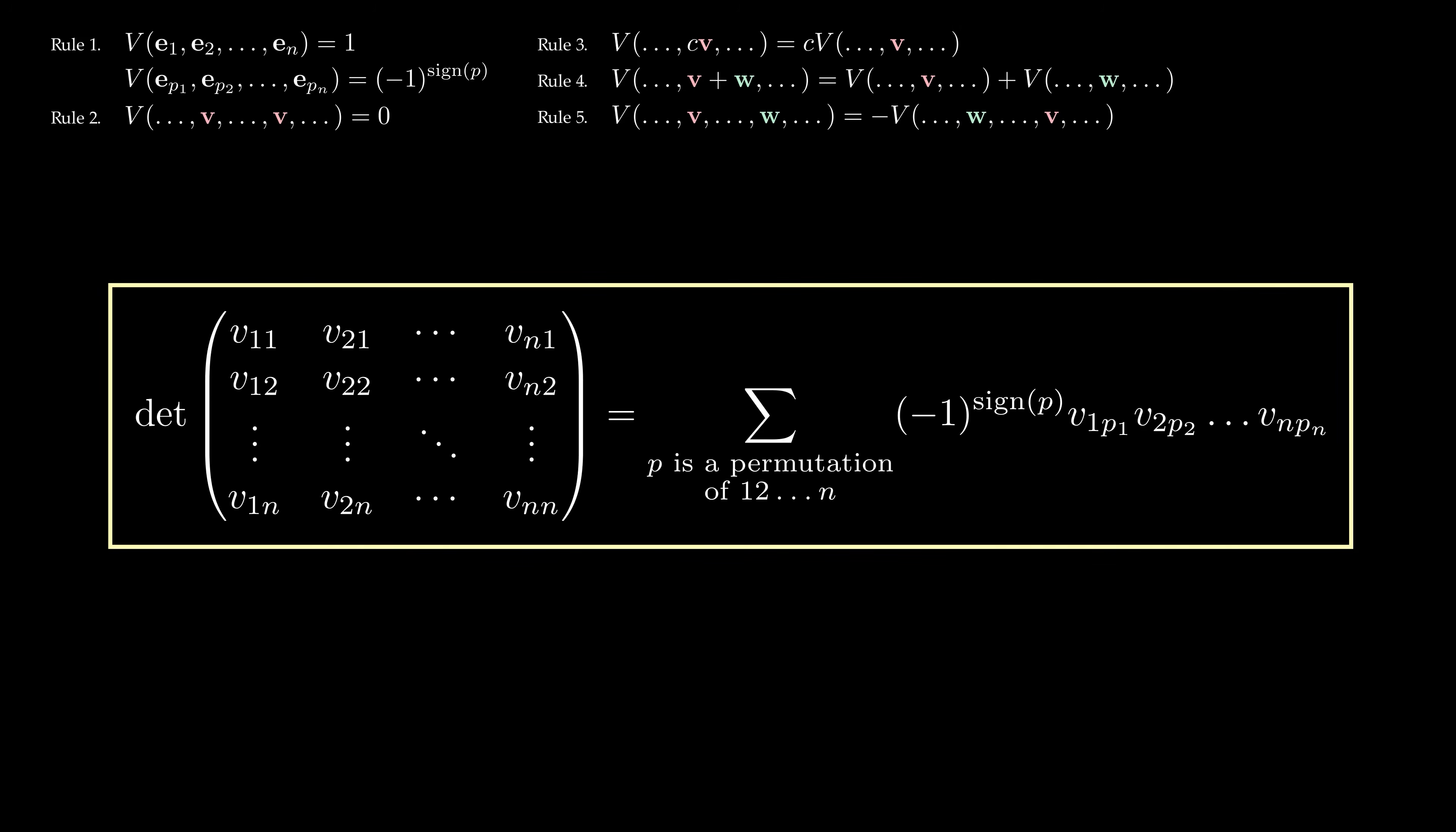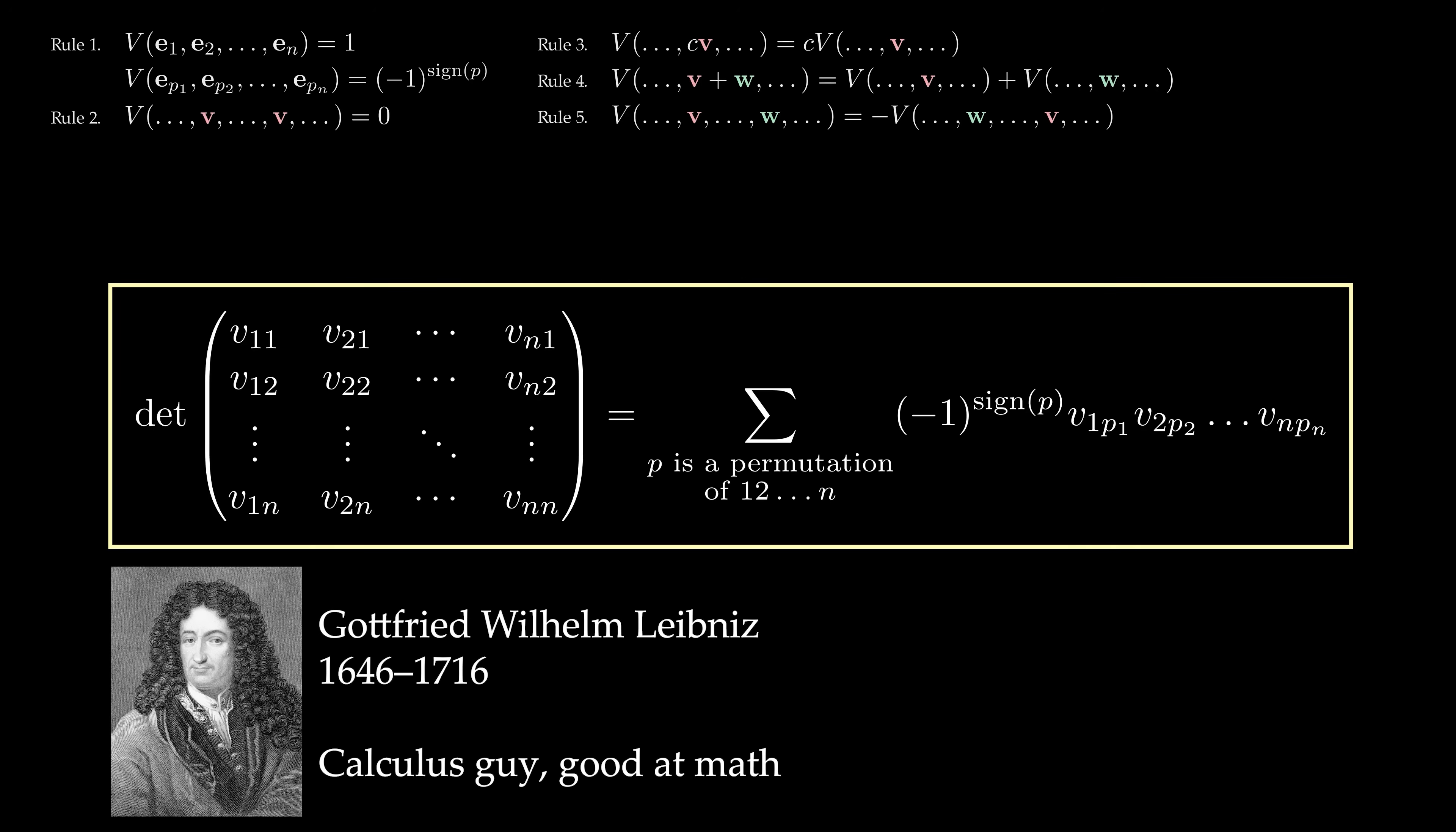But we know how to deal with such terms from our study of permutations just now. And here is the formula for the determinant of an n by n matrix. Known as the Leibniz formula, it is a sum of n factorial many terms, often taken to be the definition of the determinant. Shout out to Leibniz.